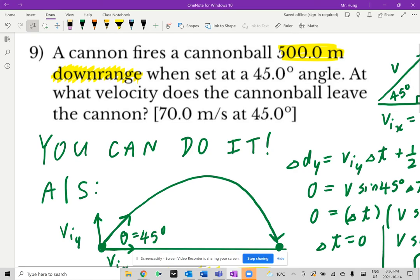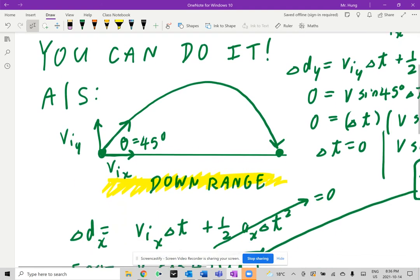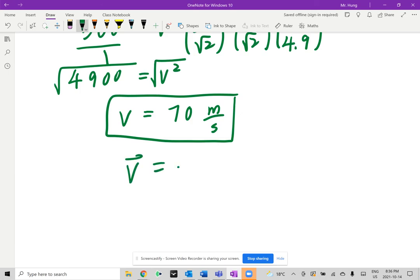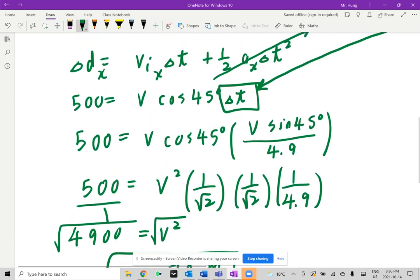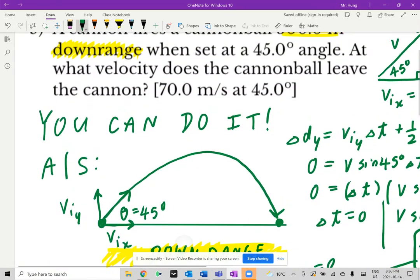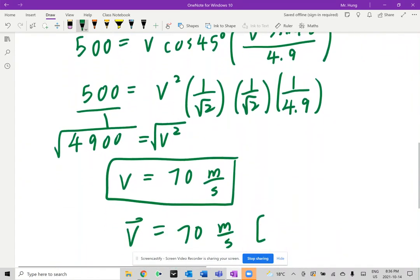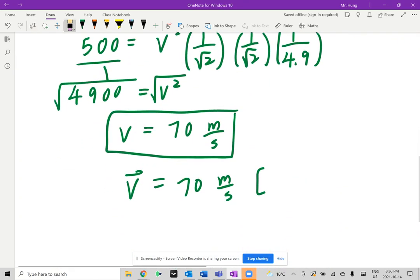And it is asking what velocity does the cannonball leave the cannon. So if you want to be a bit more clear in terms of the vector, it's going to be 70 meters per second. And in terms of direction, just like the answer key, it's going to be 45 degrees. So I'll leave it as 45 degrees just to match the answer. I'll just write down, at 45 degrees. Just like that.